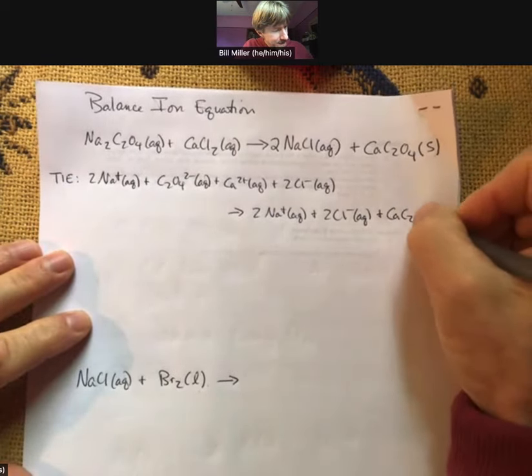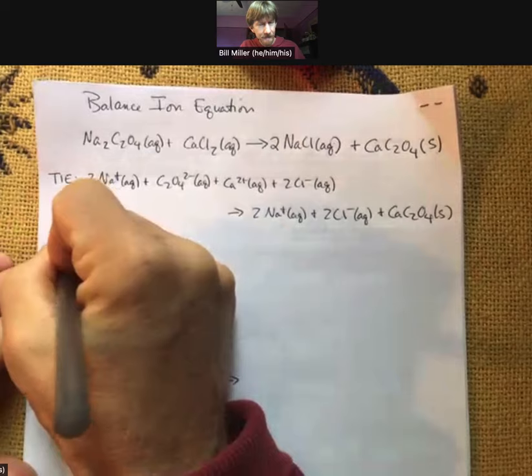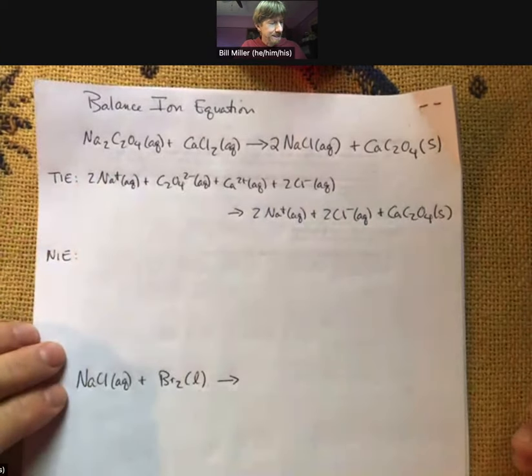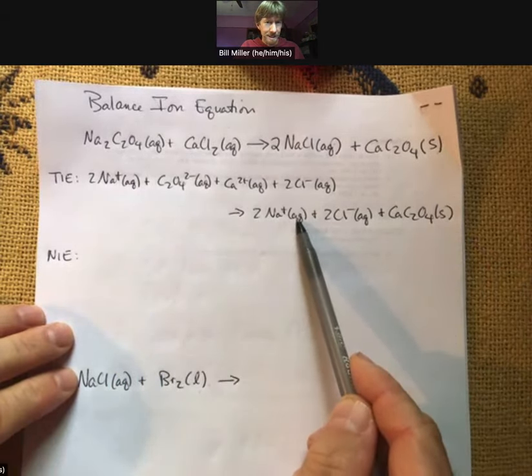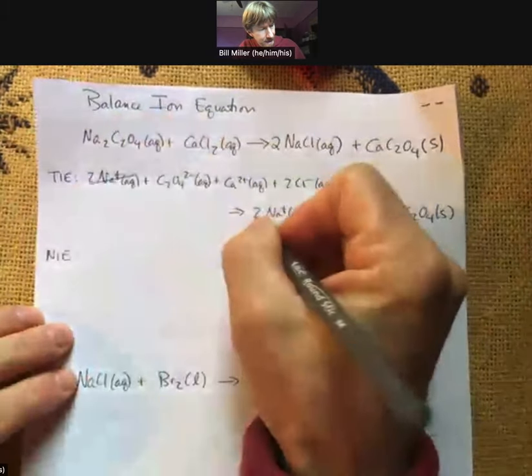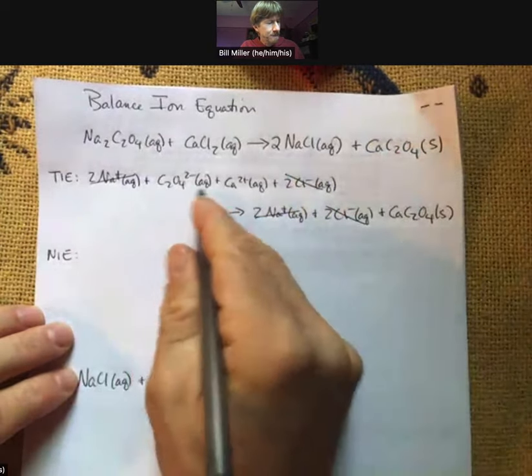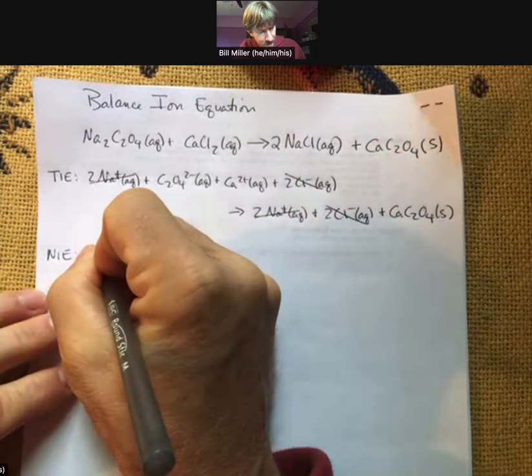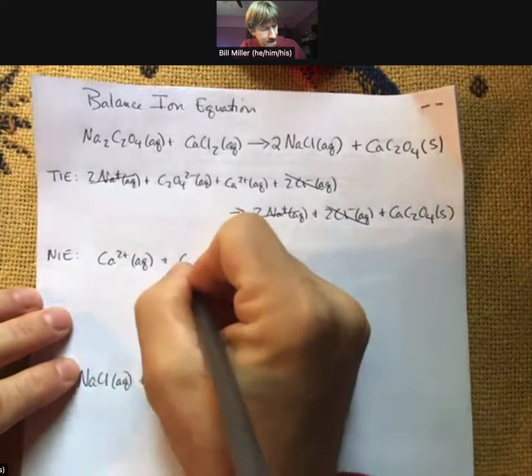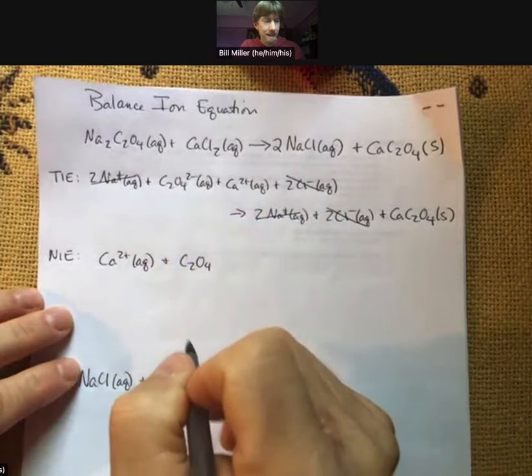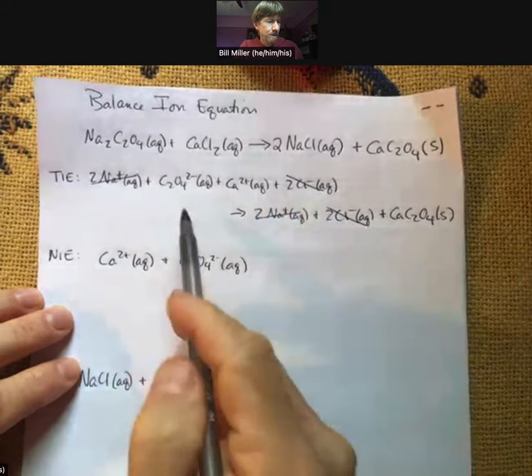But our solid stays together right there. To get to our net ionic equation, we cancel out the things that are on both sides exactly the same. What I mean by that is two sodium plus aqueous and two sodium plus aqueous, those are identical. Sodium is a spectator ion. We also have the same thing for our chlorides. What we're left with is calcium ion plus oxalate ion, not carbonate, oxalate 2 minus. Those are our two reactant species.